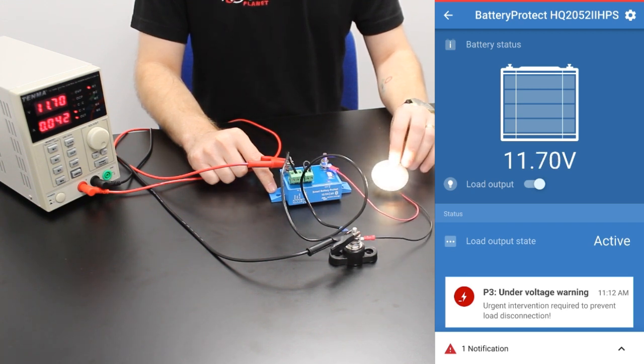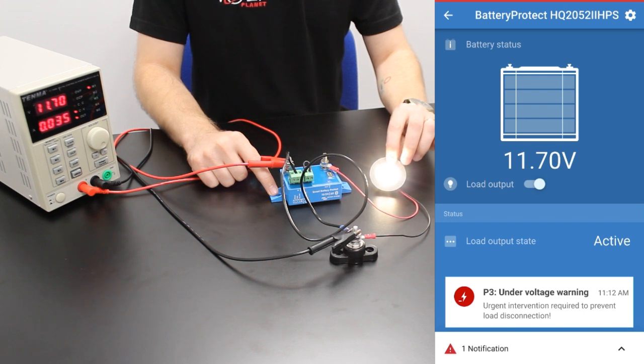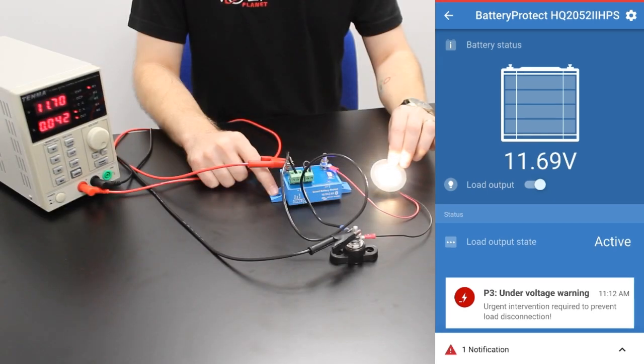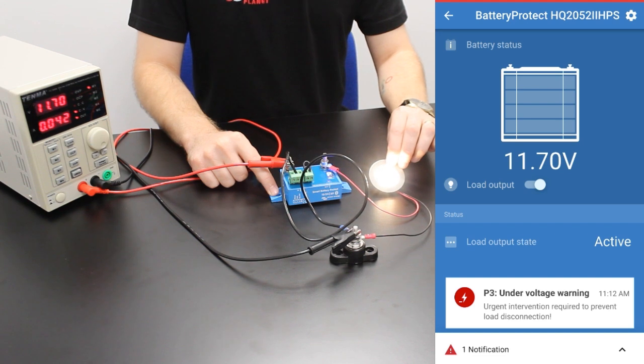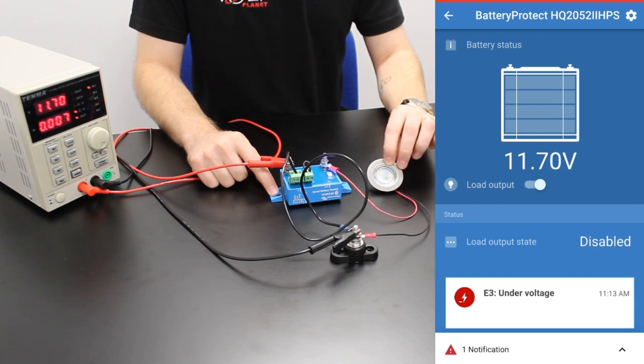This warning will stay on for 90 seconds which gives you time to connect a charger if possible, or prevents loads being disconnected prematurely for high current faults. For the purpose of this video we have cut out a portion of this and as you can see the LED light has been turned off automatically, thereby turning off all our load outputs from our battery preventing any further discharge.